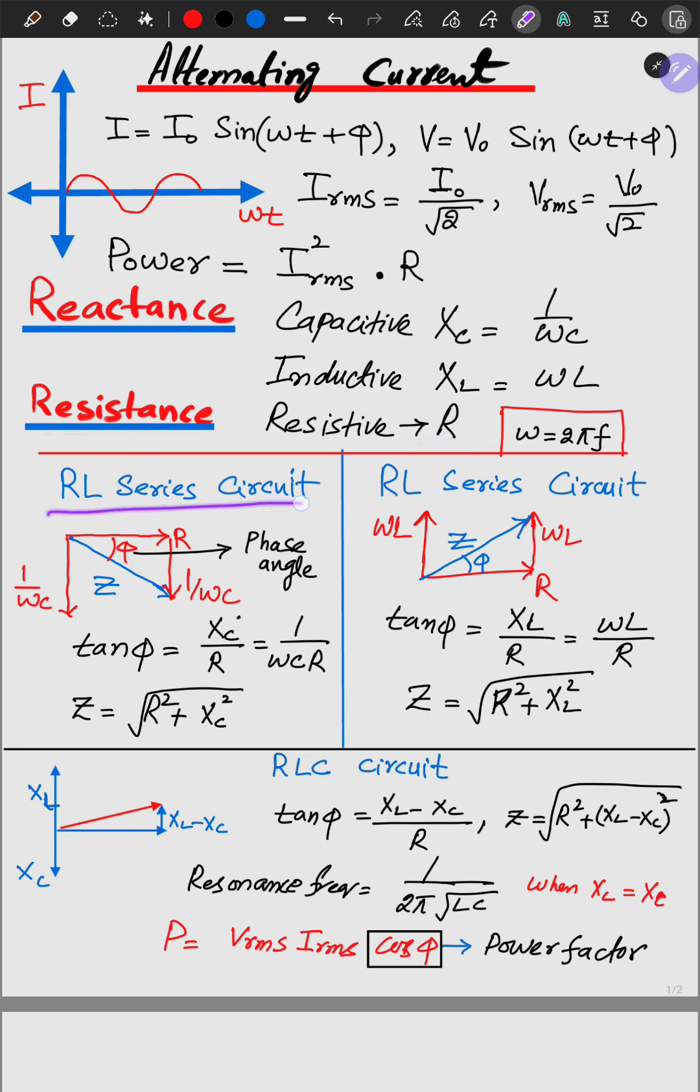In RL series circuit, the impedance diagram looks like this. This phi is the phase angle. The tangent phi is equal to XC by R and this equation becomes 1 over omega C into R.